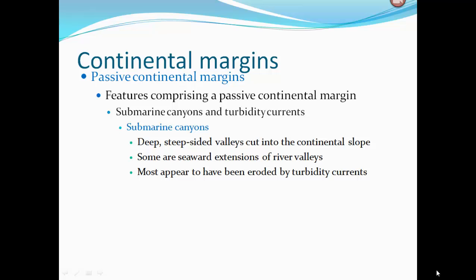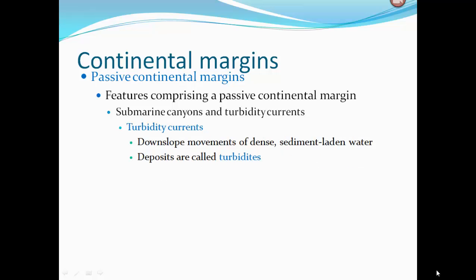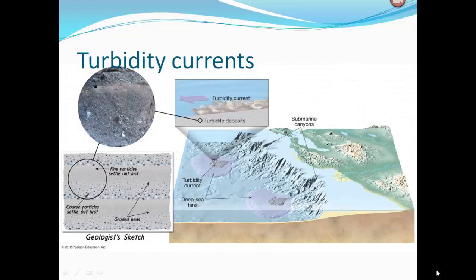Submarine canyons and turbidity currents can be found along the continental slope. Submarine canyons are steep-sided valleys cut into the continental slope — some are seaward extensions of river valleys, but most appear to have been eroded by turbidity currents. Turbidity currents are downslope movements of dense, sediment-laden water that flow down submarine canyons; the deposits they leave behind are called turbidites. These turbidity currents bring sediment down the canyon and deposit it in fan shapes called deep-sea fans on the continental rise — similar to alluvial fans from desert environments. Fine particles settle out first, and coarse particles form graded beds.